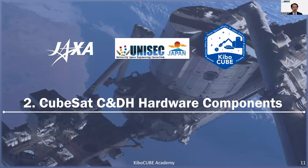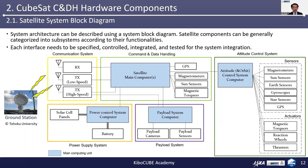The next chapter is about the C&DH hardware components. Let's take a look at a practical satellite system block diagram. The system architecture can be described using a system block diagram. Satellite components can be categorized into subsystems according to their functionalities, and each interface needs to be specified, controlled, integrated, and tested for CubeSat system integration. This diagram illustrates an exemplary satellite system. From top left to bottom right, you have the communication system, power supply system, command and data handling system, payload system, and attitude control system.